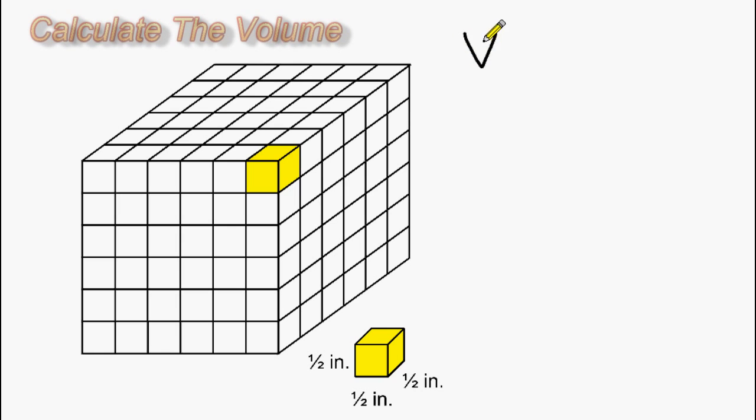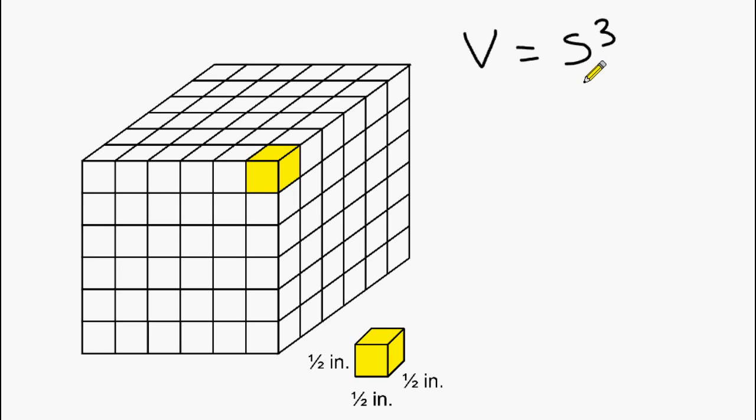To find the volume of any cube, you have to find the length of one of its sides and raise that length to the third power. The reason we can raise it to the third power is because all three dimensions will be exactly the same length. So basically you are taking that number and multiplying it by itself three times.